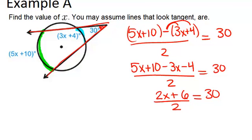At this point, there's about two ways you could proceed. You could divide each part of 2x plus 6 by 2, or you could multiply both sides of the equation by 2 to cancel out the fraction. I'm going to multiply both sides by 2 to cancel out the fraction. So now I have 2x plus 6 equals 60,